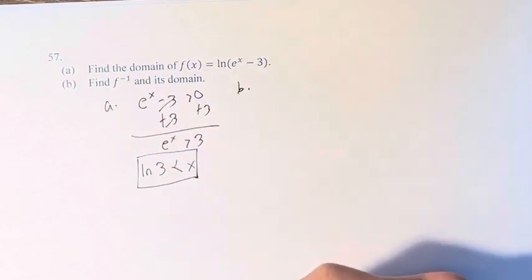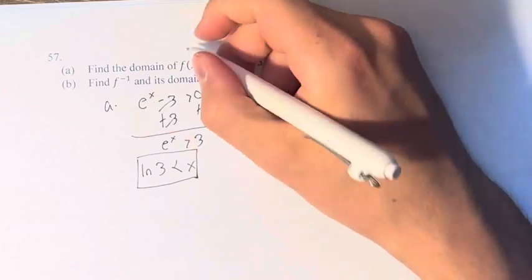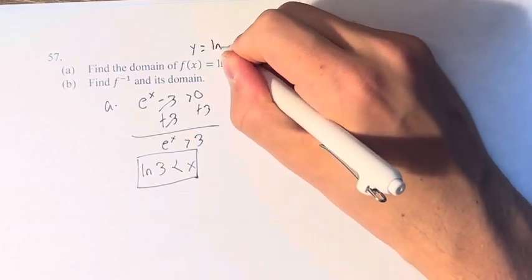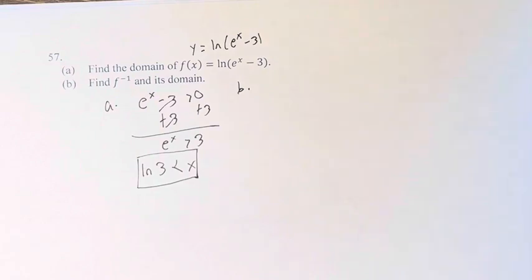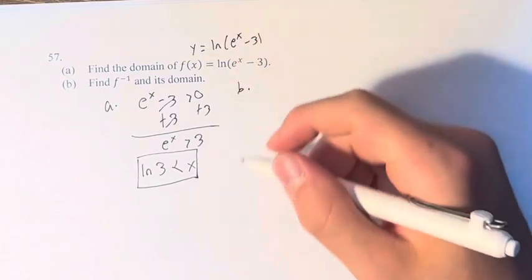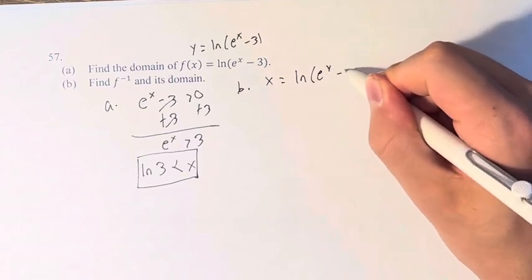Let's find the inverse of this function. We have, let's say, in the xy plane, y equals ln(e^x - 3). And the way you find the inverse is you swap x and y. So x equals ln(e^y - 3).